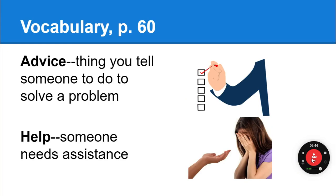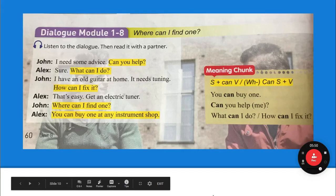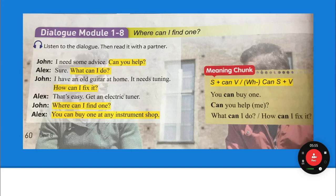Now we're going to do the dialogue for page 60. John and Alex are talking about an old guitar that John has at home. It needs to be tuned, which means it's not playing correctly. They're going to talk about finding an electronic tuner — an electronic tuner helps the strings on the guitar play the correct notes. Just listen first.